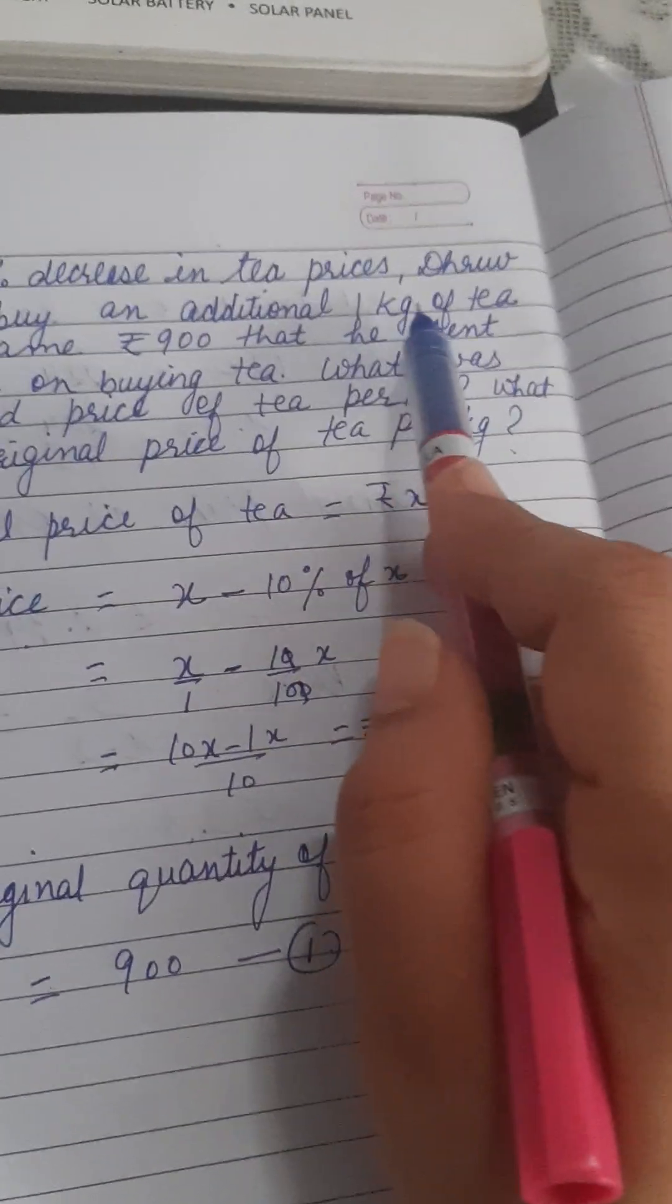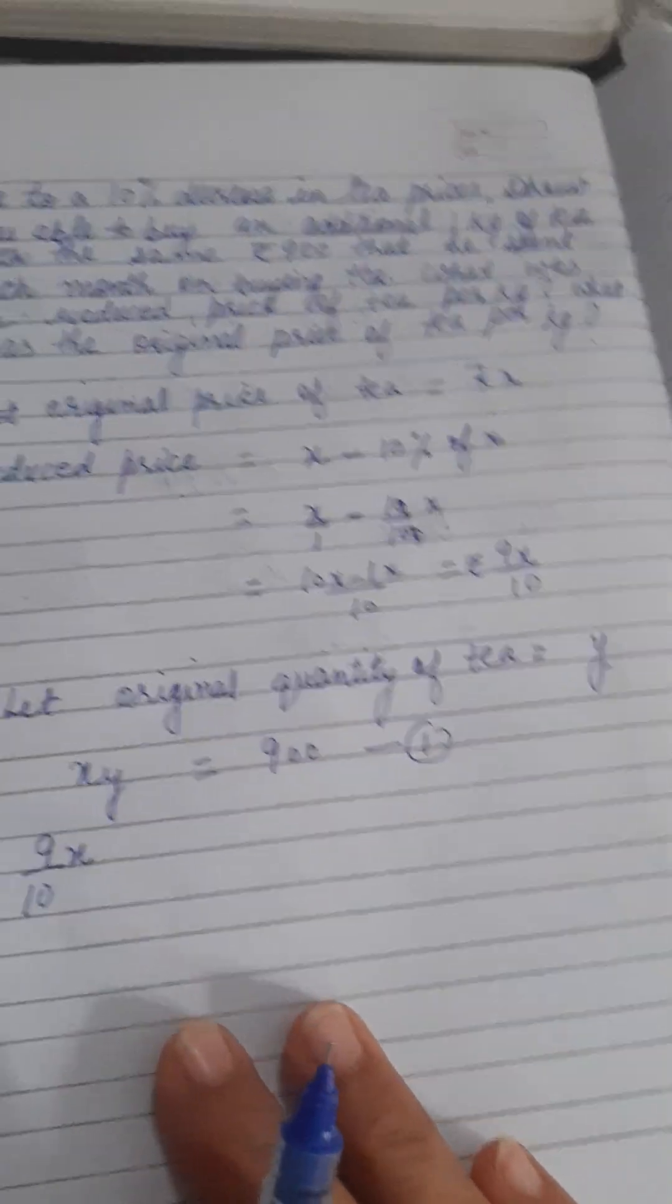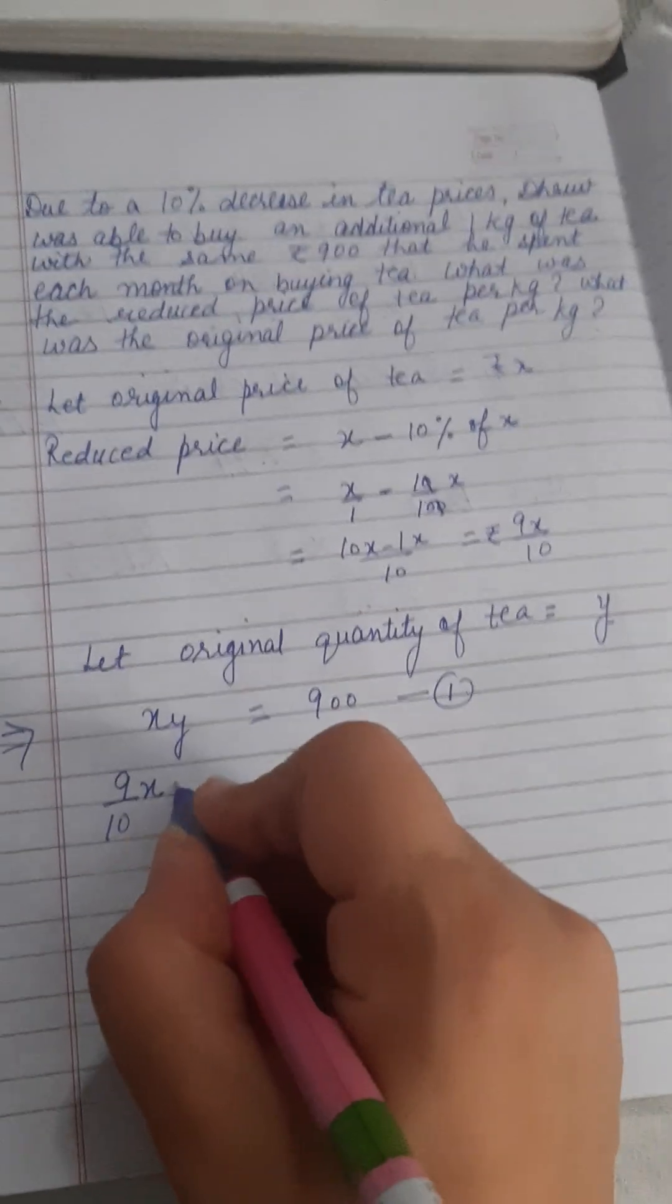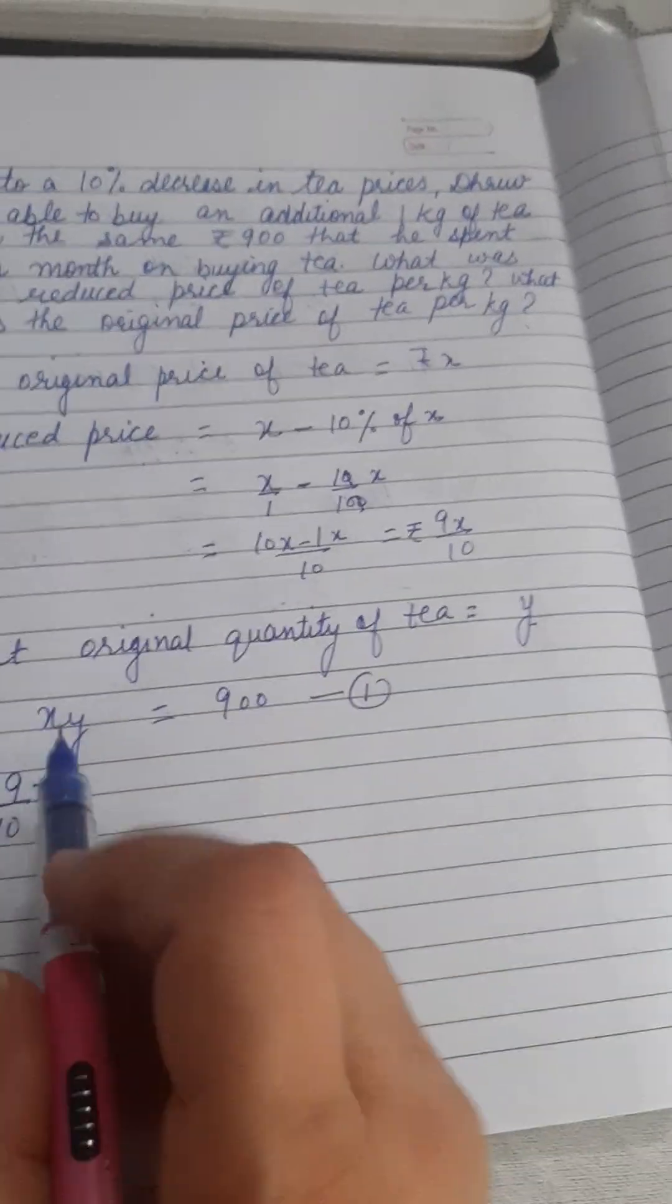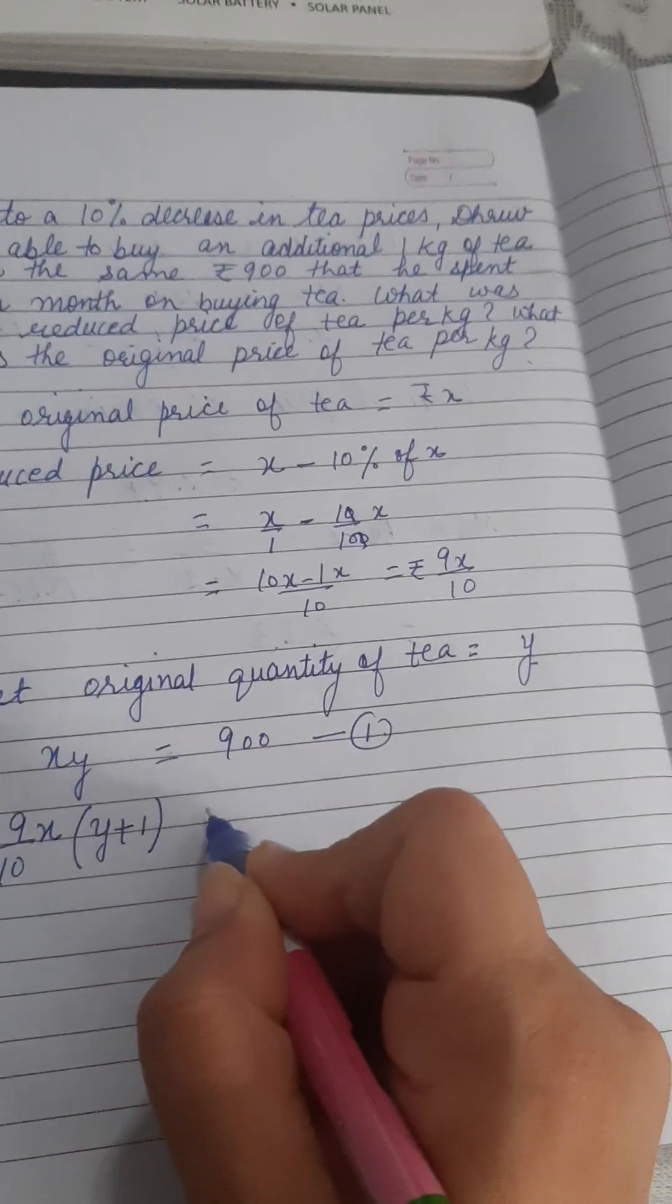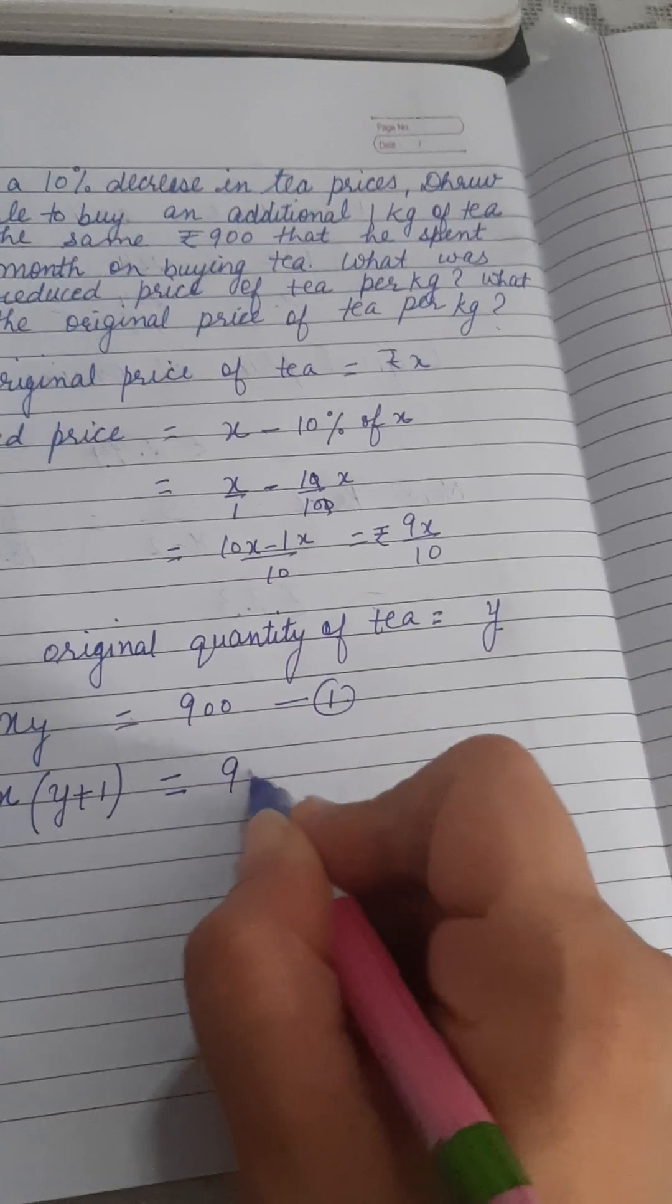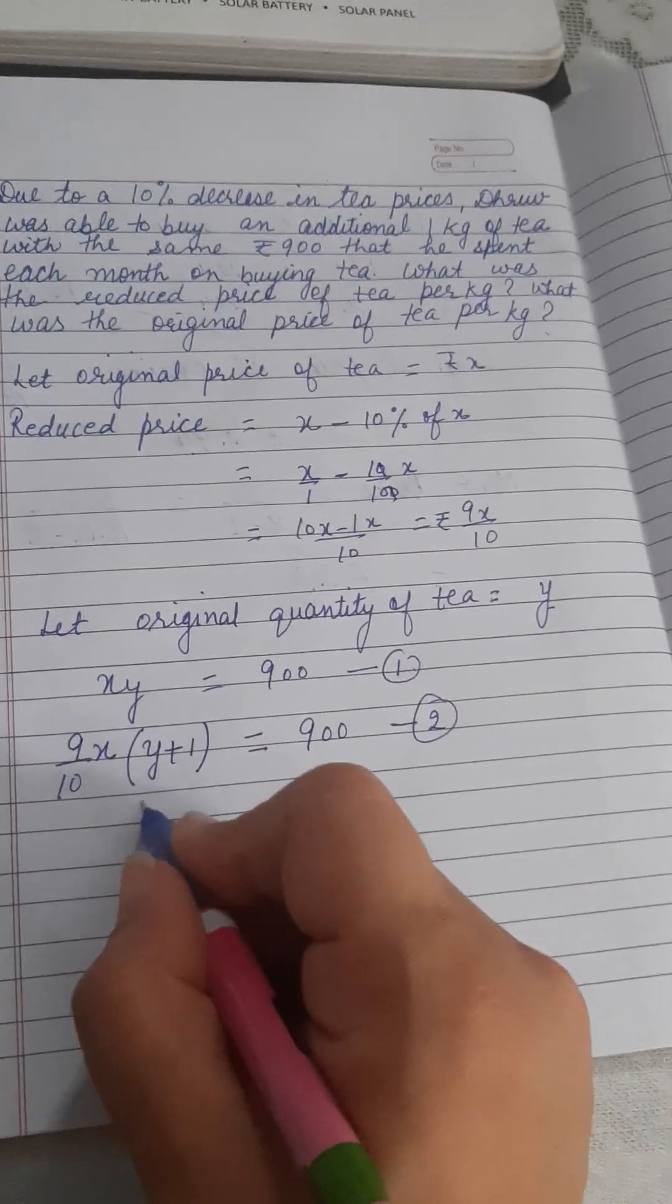Additional 1 kg of tea is purchasable, right? So it means Drew was able to buy 1 kg more when the price was reduced. It means Y plus 1, and this is also equal to 900.